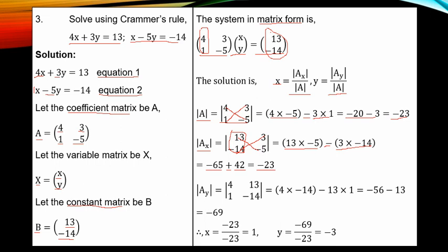For determinant of A sub Y, this is the Y column with entries 3 and minus 5. You replace them with the constant matrix — 13 and minus 14. You find the determinant: 4 times minus 14 minus 13 times 1. That gives minus 56 minus 13, which is minus 69.